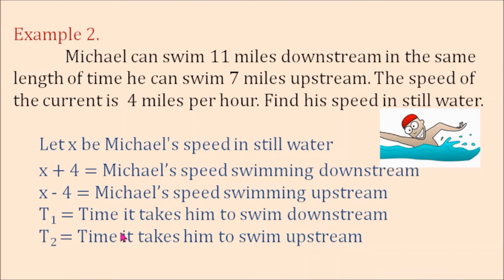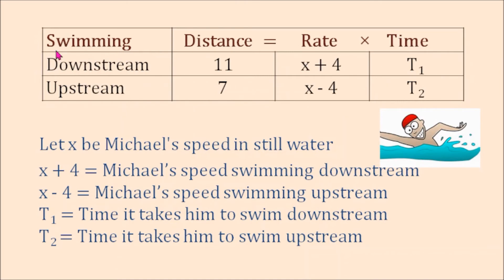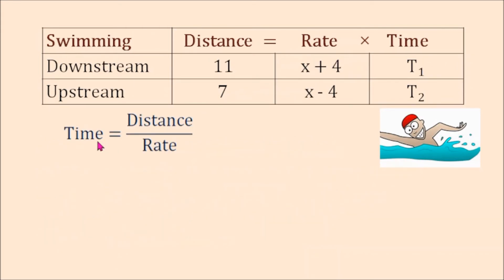Let T-sub-1 be the time it takes him to swim downstream, and T-sub-2 be the time it takes him to swim upstream. We organize this in a table: swimming downstream, the distance is 11 miles, the rate is x plus 4, and the time is T-sub-1; swimming upstream, the distance is 7 miles, the rate is x minus 4, and the time is T-sub-2. Using time equals distance over rate, the time downstream is 11 over (x plus 4), and the time upstream is 7 over (x minus 4).